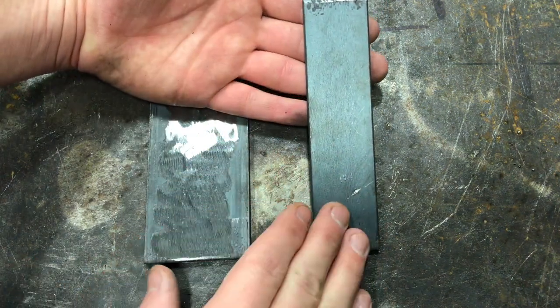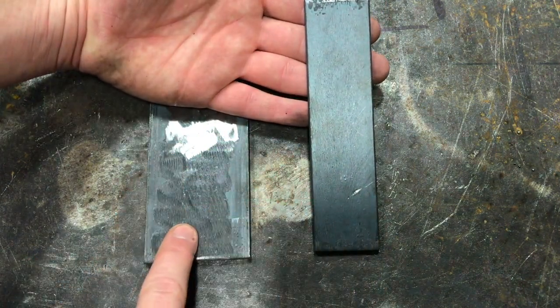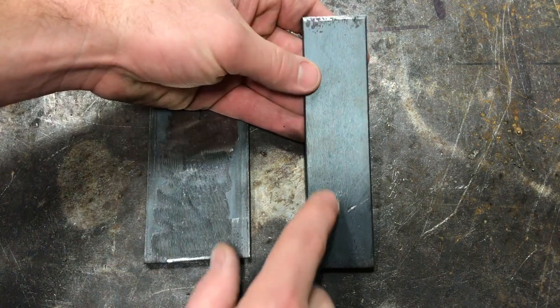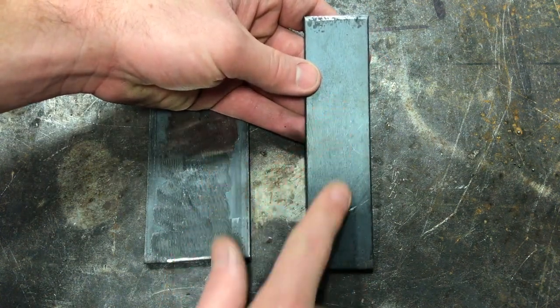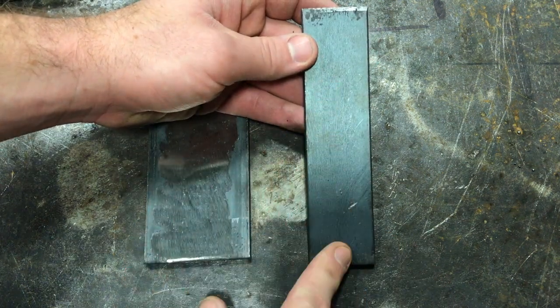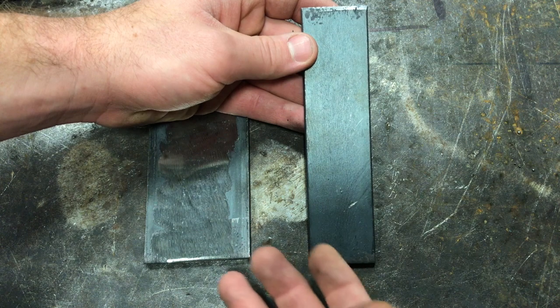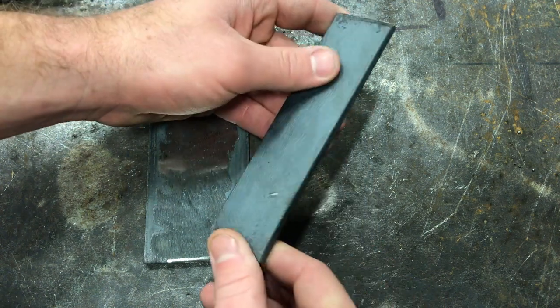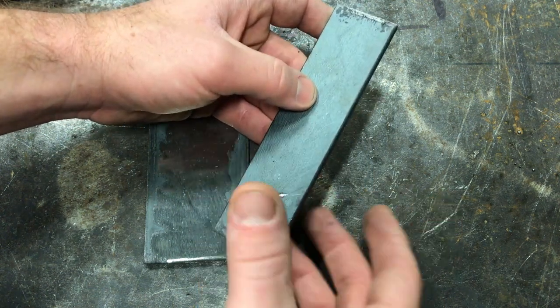The difference between these two is really this one's ground, this one's not. What this dull gray layer is here is called mill scale. Mill scale is part of the process to hot roll steel. What happens is it's going from a molten state and then it's slowly cooling down and all the contaminants rise to the surface.